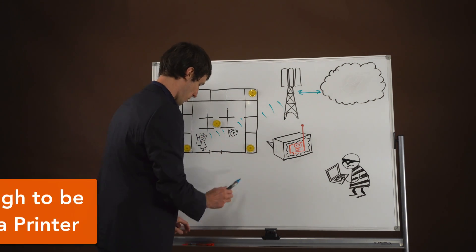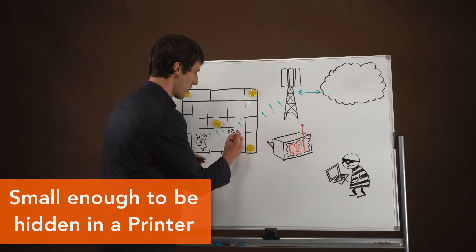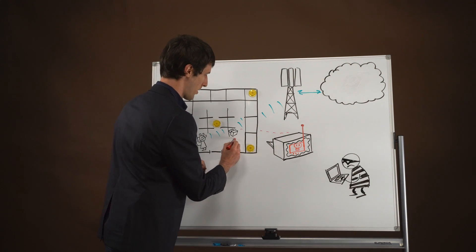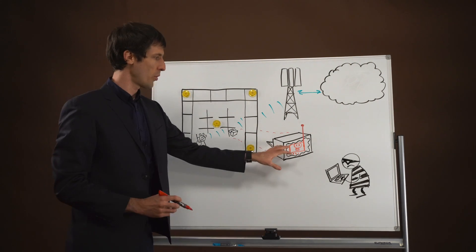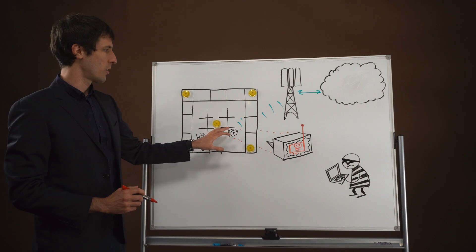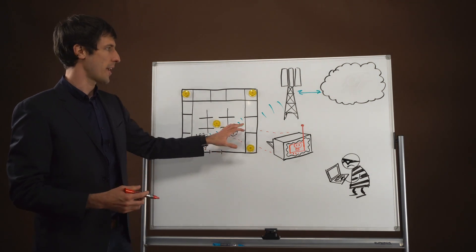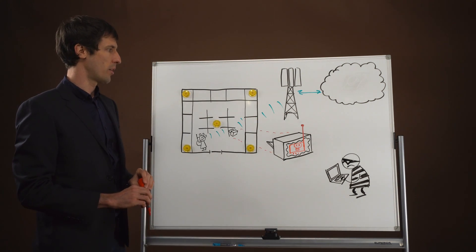But what's actually contained inside the printer is a small rogue cell tower that is masquerading as a legitimate cell tower.